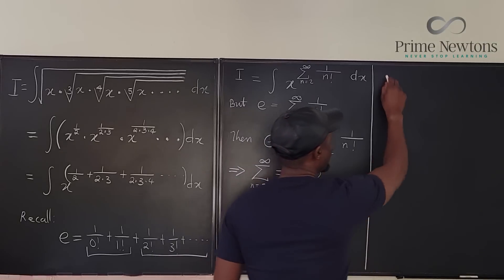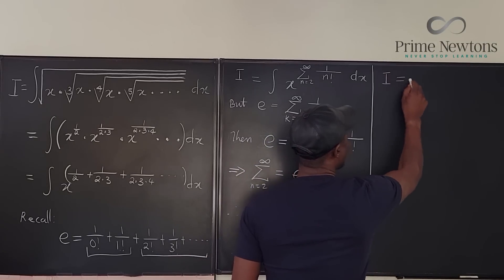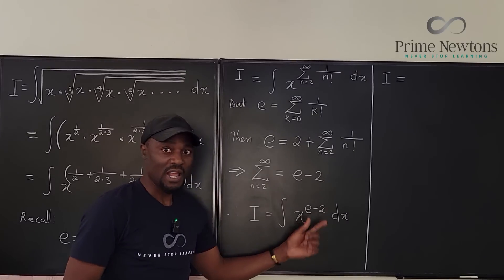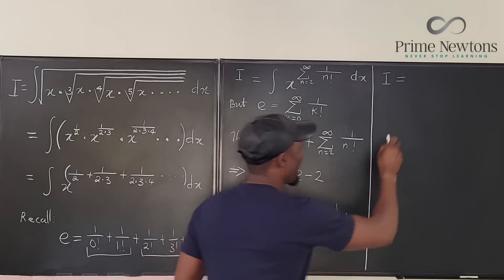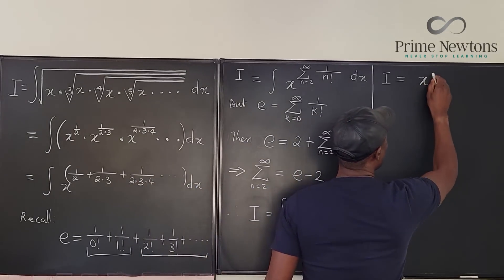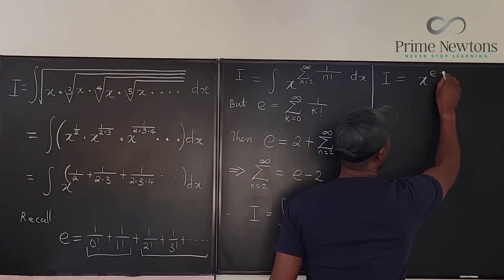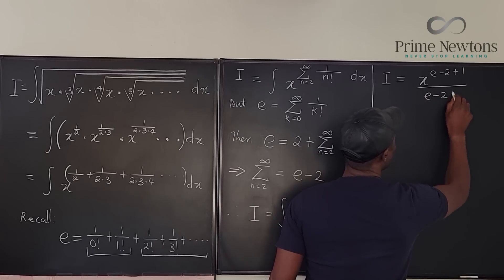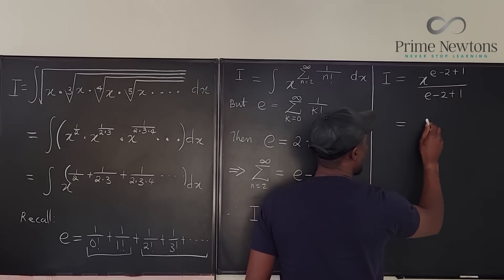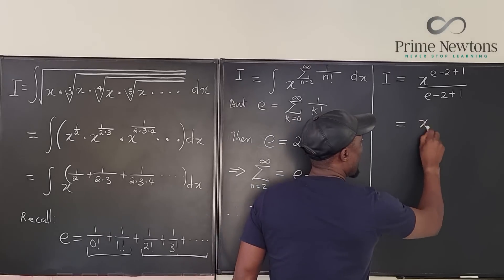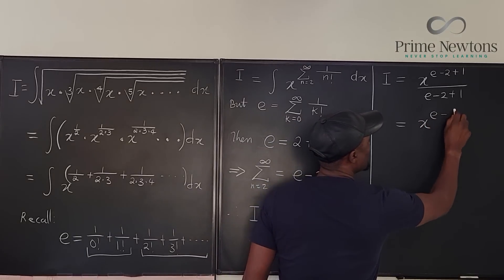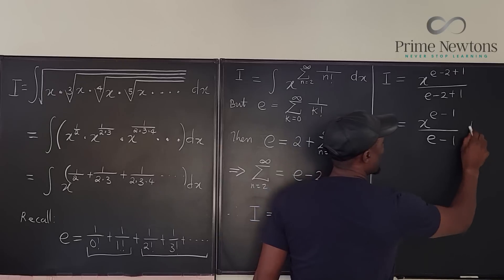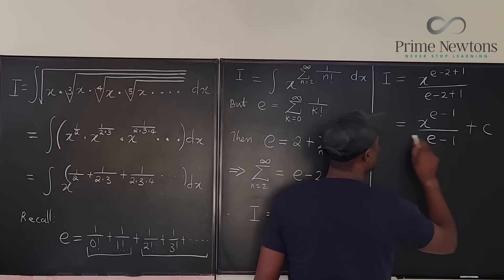Applying the power rule: I will be equal to X raised to the power (e − 2 + 1) divided by (e − 2 + 1), which gives us X to the (e − 1) over (e − 1), plus C. That's the final answer.